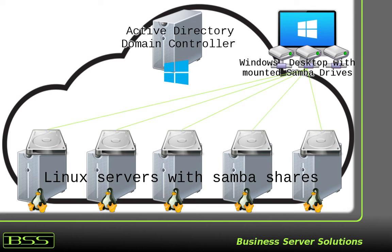Then on Linux servers, we will have Samba shares and users which will be authenticated against the Active Directory domain controller. These shares will also be able to mount on Windows desktop, and we will use both Winbind and SSSD methods to integrate Linux servers to Active Directory domain. We will use various Winbind methods like IDmap RID or IDmap AD.